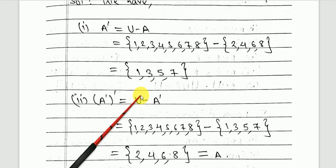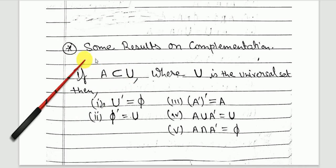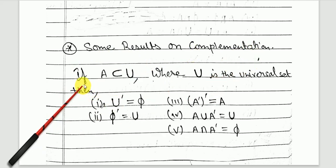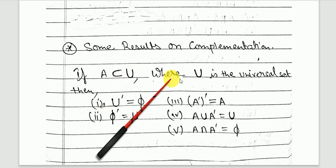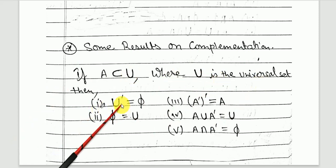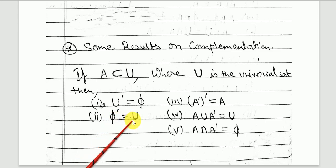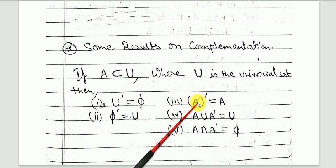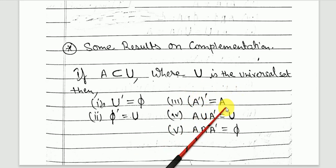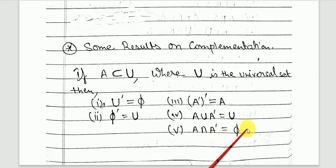Some results on complementation: if A is a subset of universal set U, then: the complement of U is the empty set; the complement of the empty set is U; the complement of A complement is A itself; A union A complement equals U; and A intersection A complement equals the empty set. This concludes the third lecture on sets.